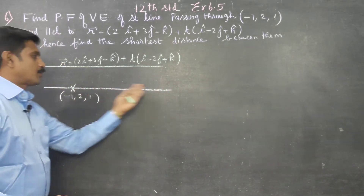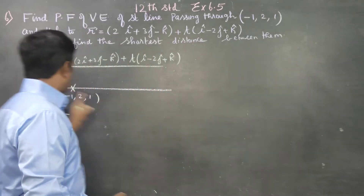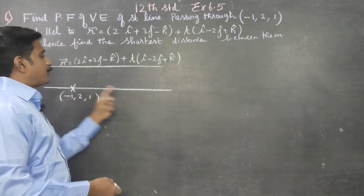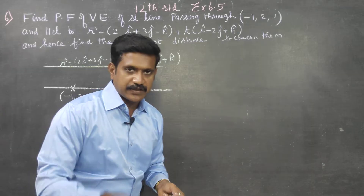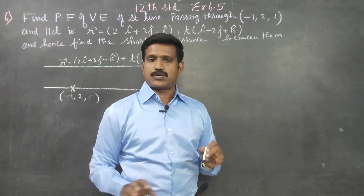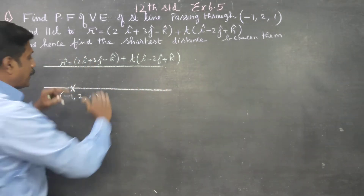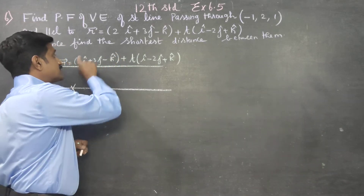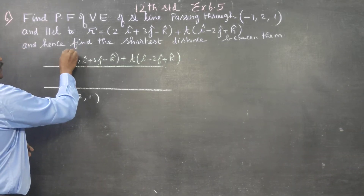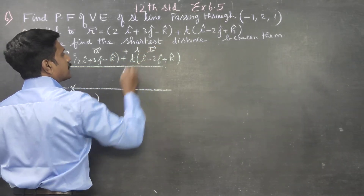I want one equation of a straight line. I want the equation of this straight line, where I want it to be parallel. The formula is: R vector is equal to a vector plus t into b vector.